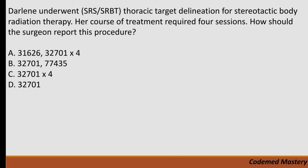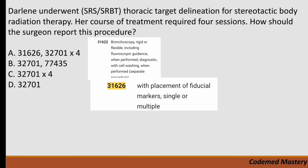Question: Darlene underwent SRS/SBRT thoracic target delineation for stereotactic body radiation therapy. Her course of treatment required four sessions. How should this procedure be reported? Option A includes 31626 — bronchoscopy, rigid or flexible, including fluoroscopic guidance, with placement of fiducial markers. However, the question does not mention bronchoscopy or placement of markers, so we cannot code 31626.